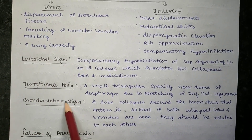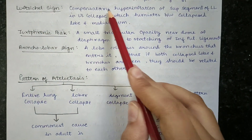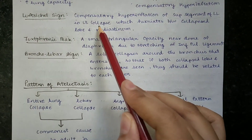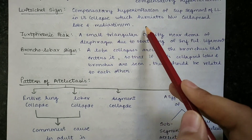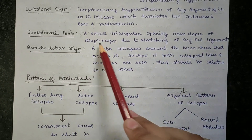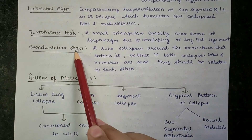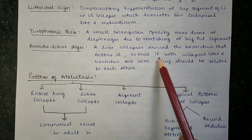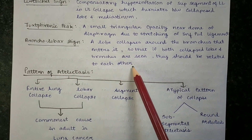Three signs are very important. The Luftsichel sign: compensatory hyperinflation of the superior segment of the lower lobe in upper lobe collapse, which herniates between the collapsed lobe and mediastinum. The Juxtaphrenic peak: a small triangular opacity near the dome of the diaphragm due to stretching of the inferior pulmonary ligament. The Bronchiolobar sign: a lobe collapses around the bronchus that enters it, so if both the collapsed lobe and bronchus are seen, they should be related to each other.